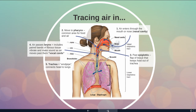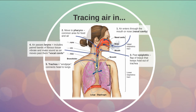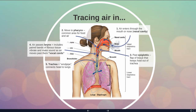Next we have the trachea, better known as the windpipe. This is the pipe that's going to connect the head down with the lungs, and you'll notice in this picture it's got all these little light blue sections. This is actually cartilage inside the tube that helps it stay inflated so that it doesn't collapse down.